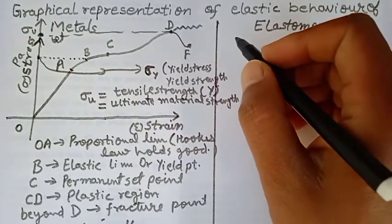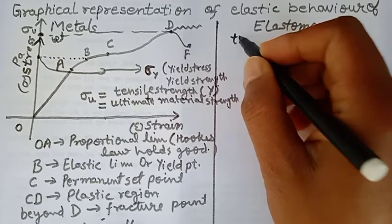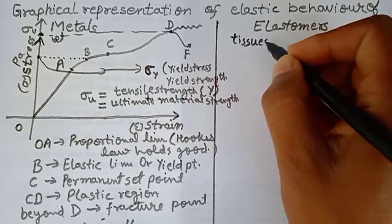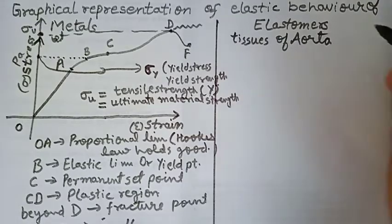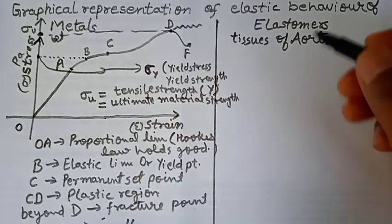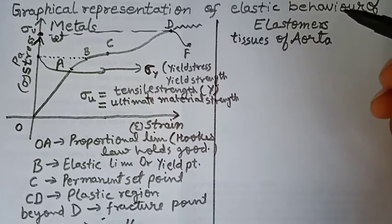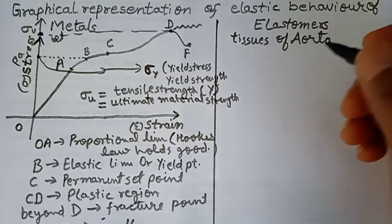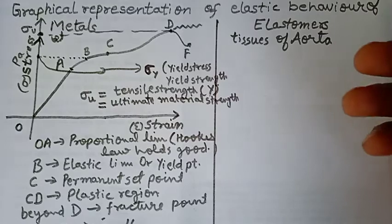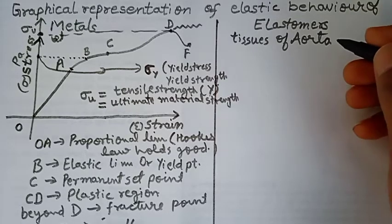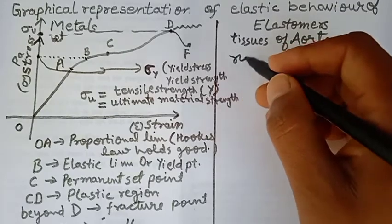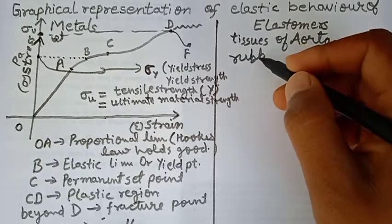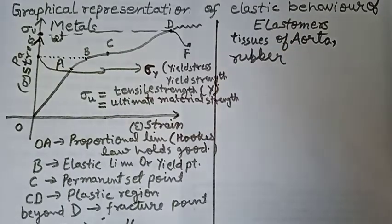First, I will give you the example: a famous example—tissues of aorta, a vessel of heart, and other blood vessels, and rubber. These are elastomers.